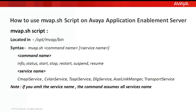The service name could be any of the AE services such as CMAPI service, which is the device media and call control service, CVLAN, TSAPI, DLG, SI link manager, or transport service. In case we do not specify the service name, the command assumes all service names. Let's now see the demonstration of this script.